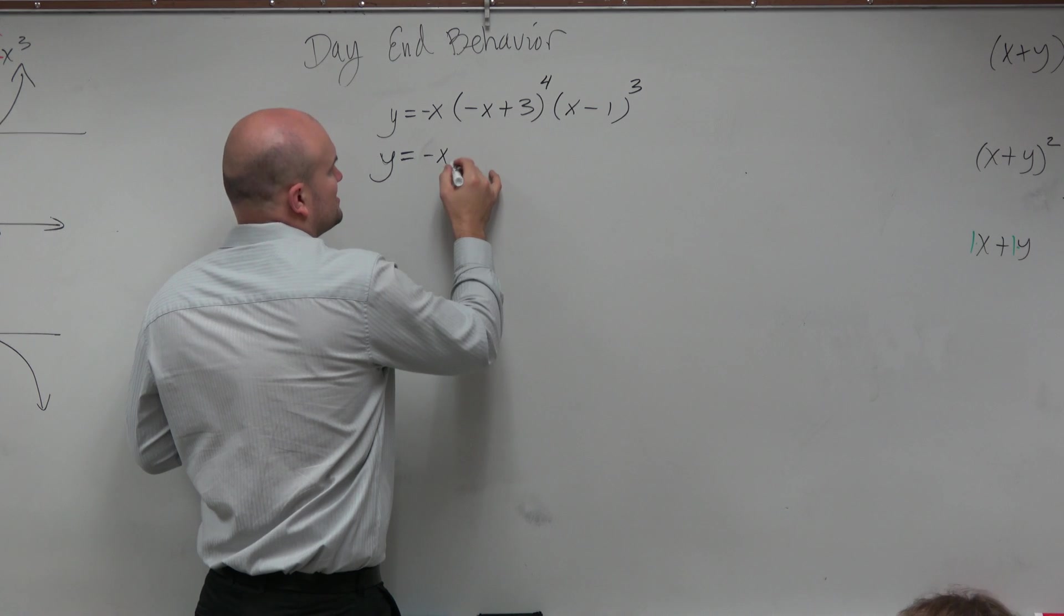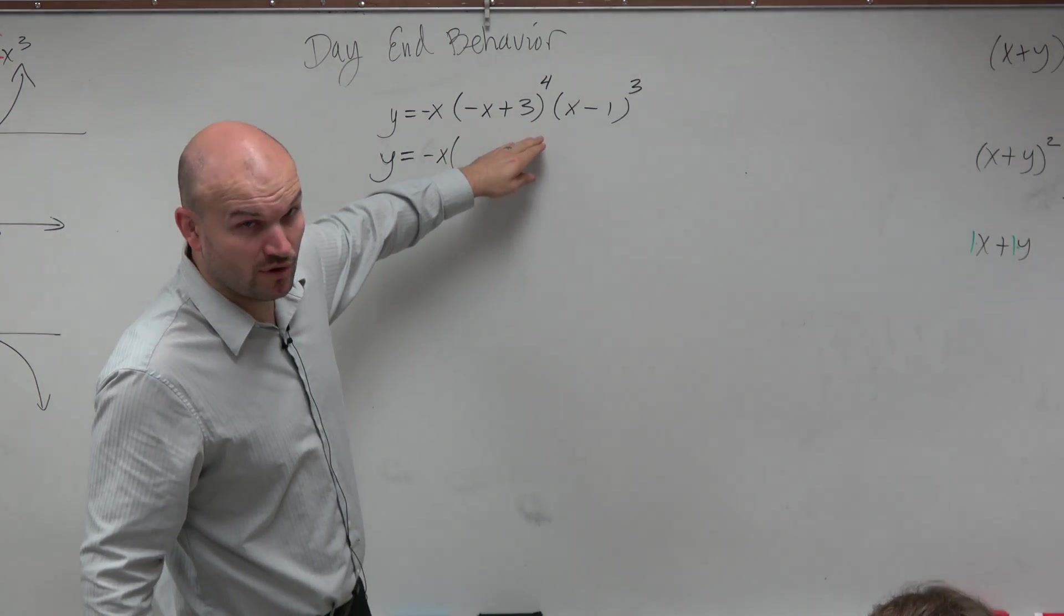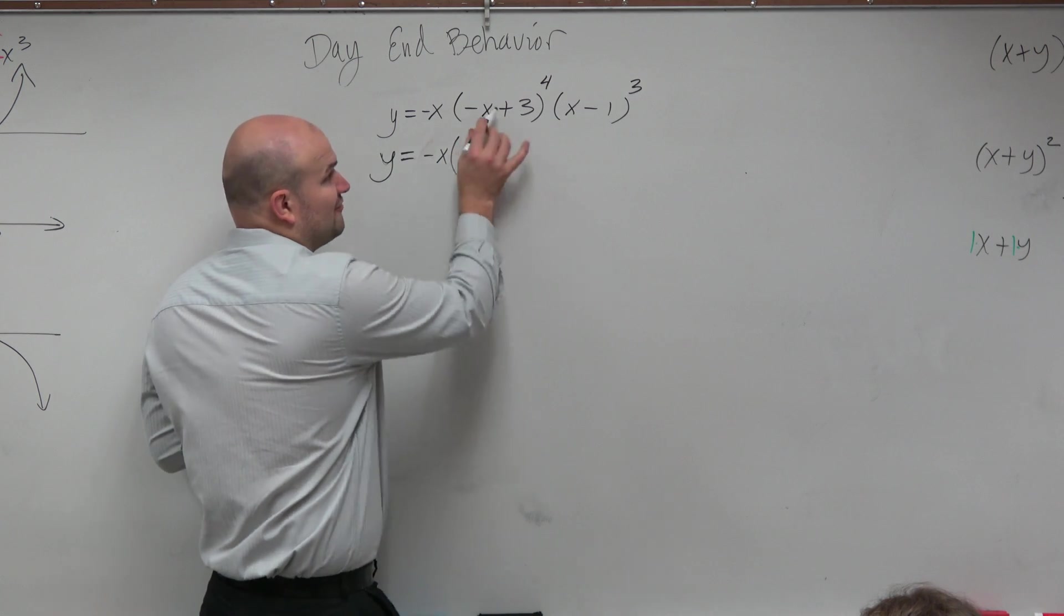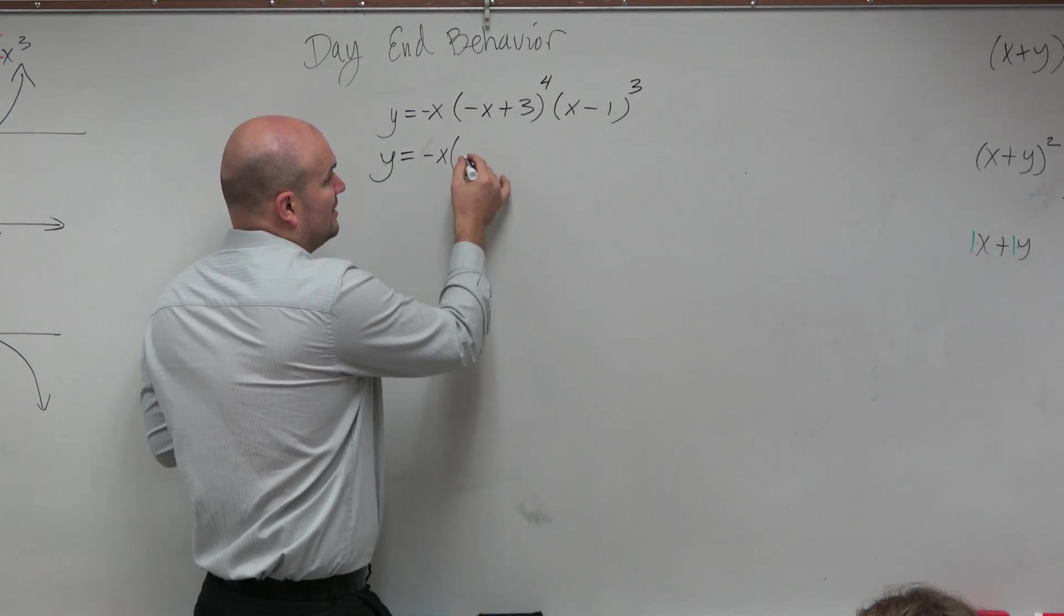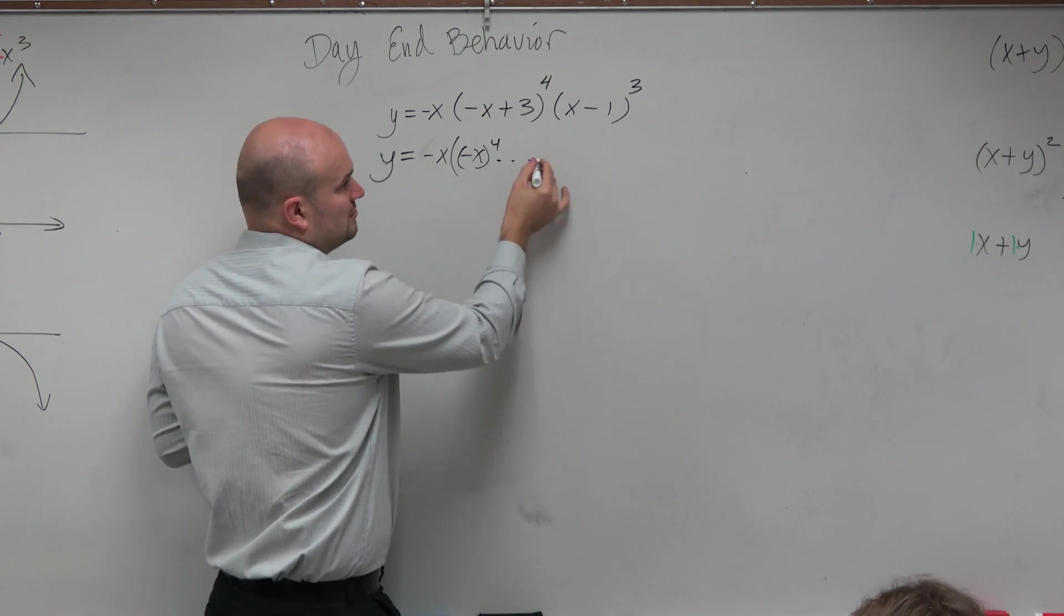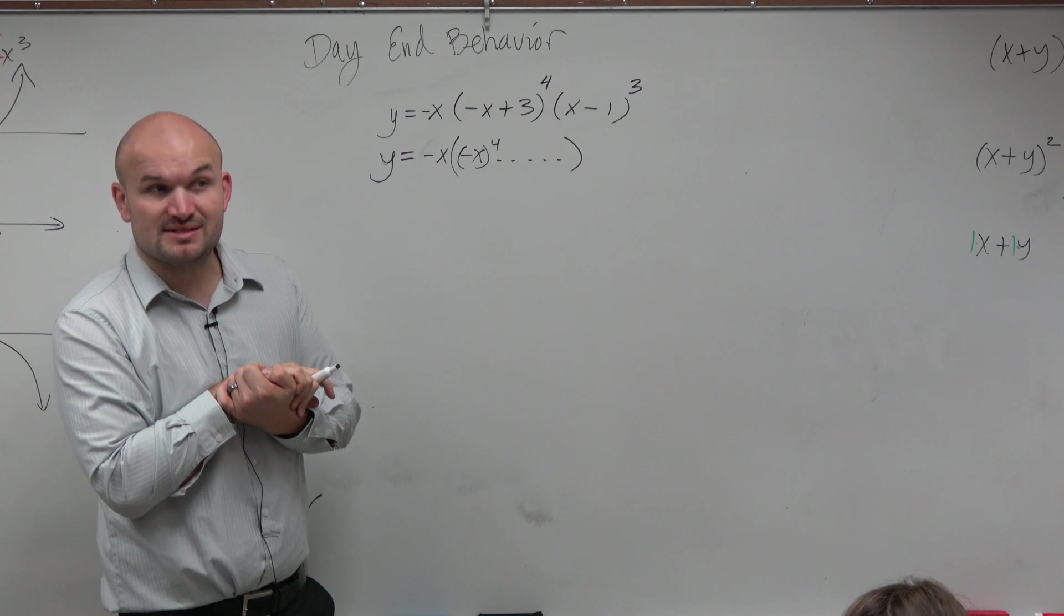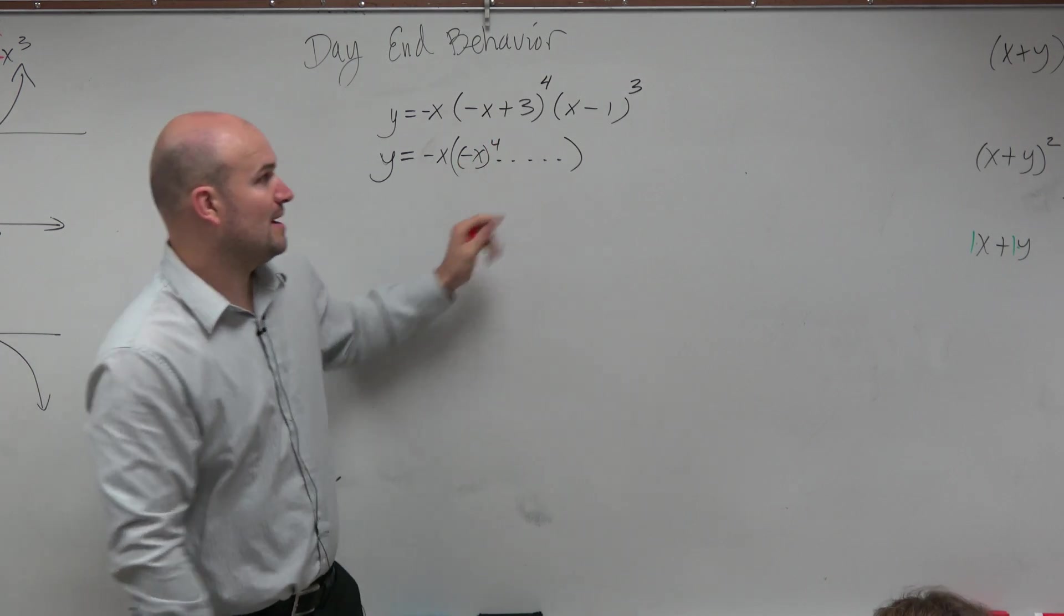So here we have negative x, fine. If we're going to take negative x plus 3 to the fourth, you guys would agree with me that the first term, that's all we care about, is negative x to the fourth power. Would everybody agree with me on that? It's very important for you guys to put parentheses there. Negative x to the fourth power.